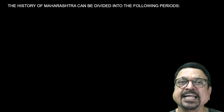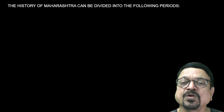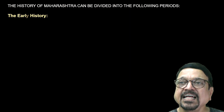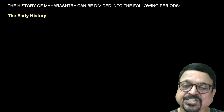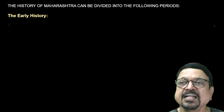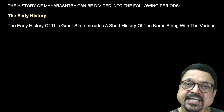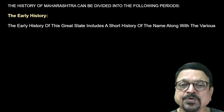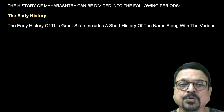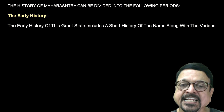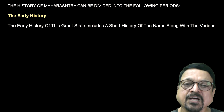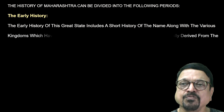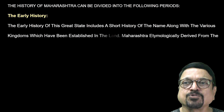Now the history of Maharashtra can be divided into the following periods. The first one is the early history. The early history of this great state includes a short history of a few important names. It is not possible to give all names in detail, but we are going to cover those which were important from a temple architecture point of view.